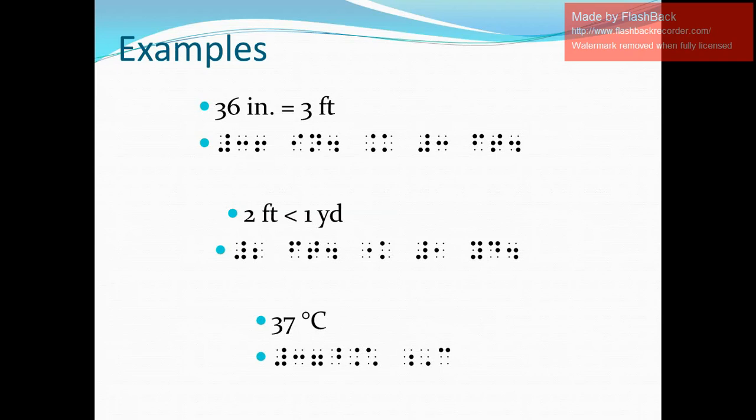So here for our additional examples, we have 36 inches is equal to three feet. So in Nemeth, we need to write numeric indicator, digits three and six, space, the abbreviation for inches which are letters I and N, followed by a period, space, then equal sign in Nemeth, space, then numeric indicator, digit three, space, and then the abbreviation for feet — letters F and T — and then period.